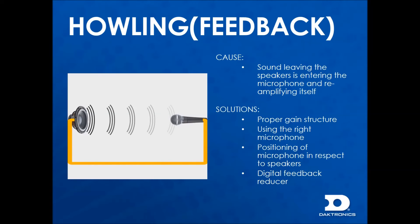A helpful tool for assisting in feedback issues is the digital feedback reducer. This component finds problem frequencies and cuts them down to eliminate feedback at those frequencies.